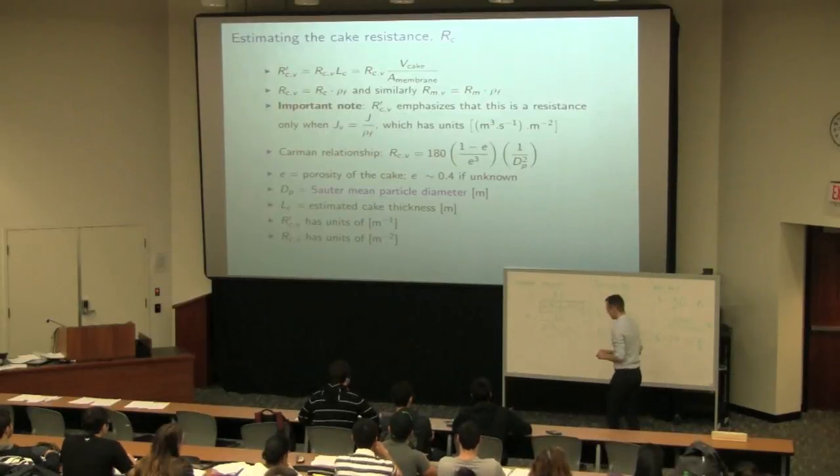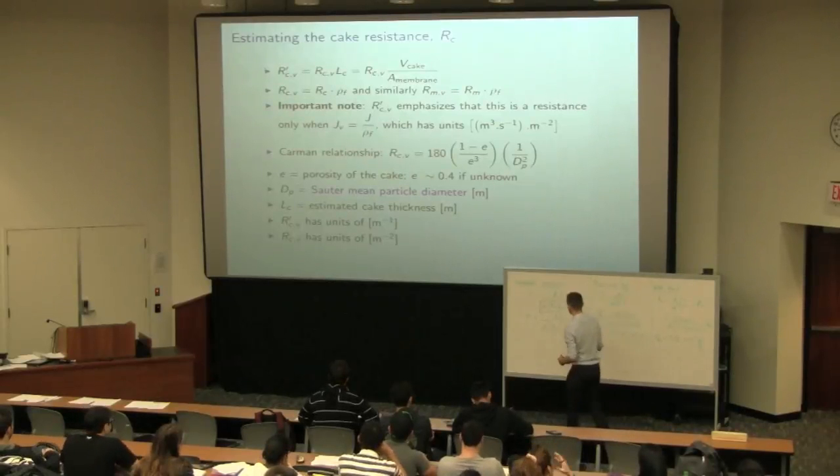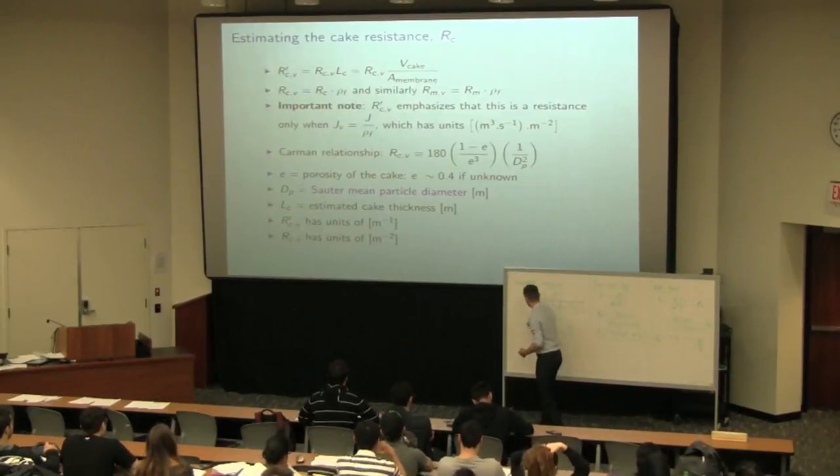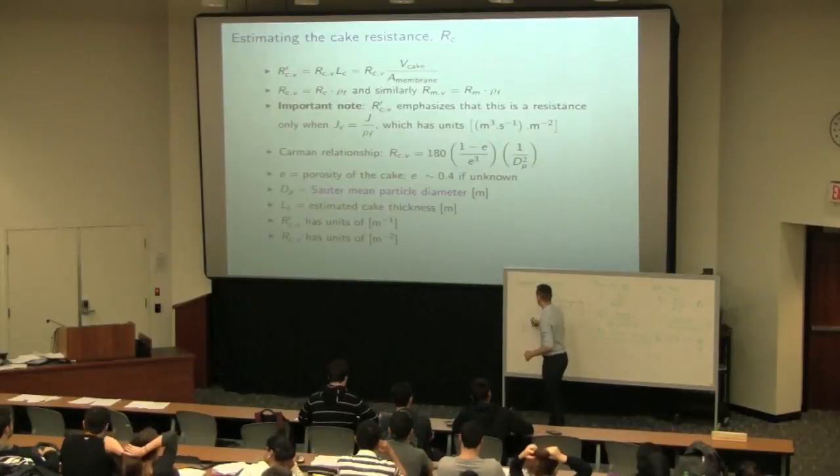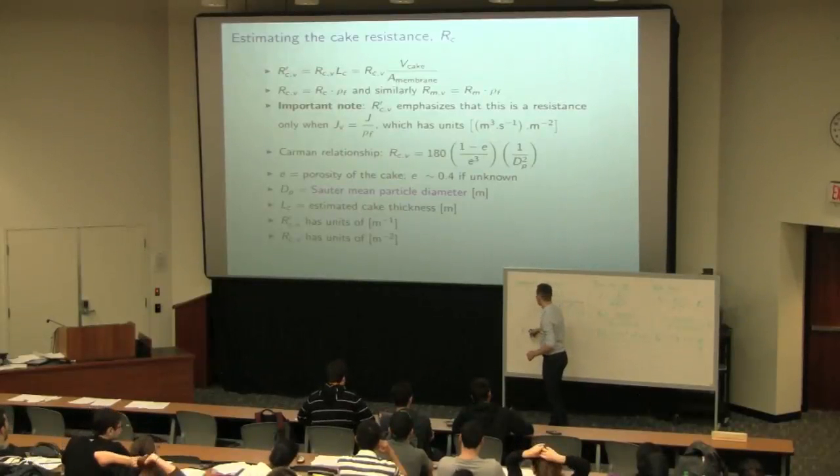So we're currently using flux J in mass flow, kilograms per second per unit area. But the correlations for RC assume that you've expressed the flux J in terms of its volumetric flow. So what we do is, we can get to that quite easily. If we just take our basic equation that we started with, and let's just modify it very simply by dividing the mass flow flux divided by the density of the permeate.